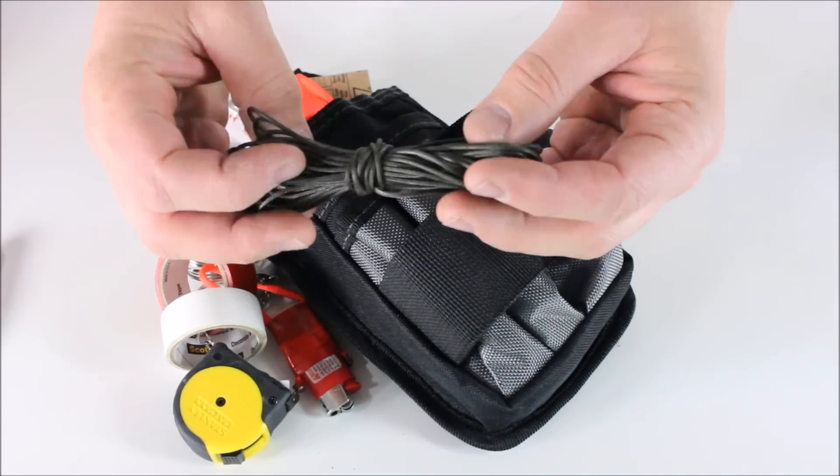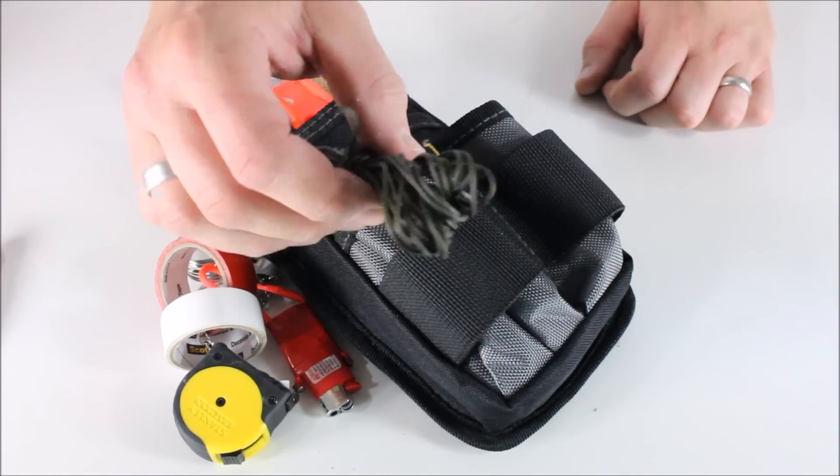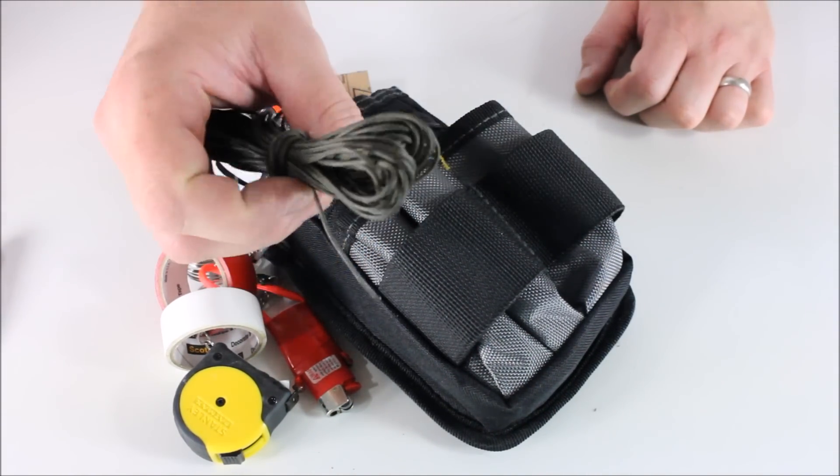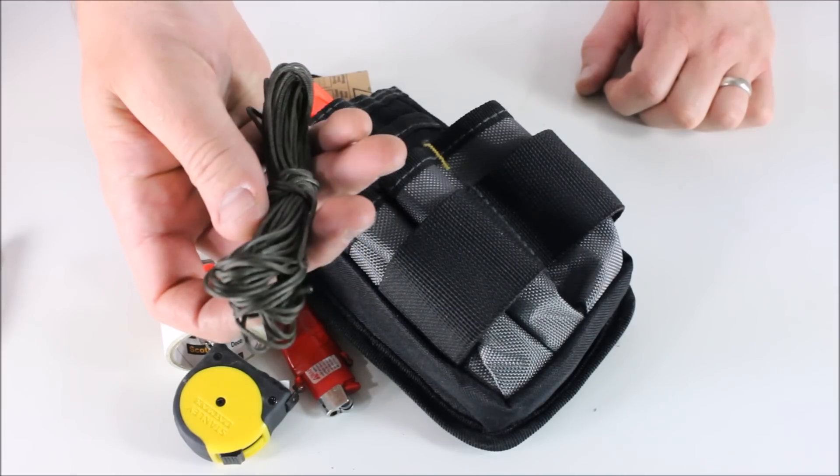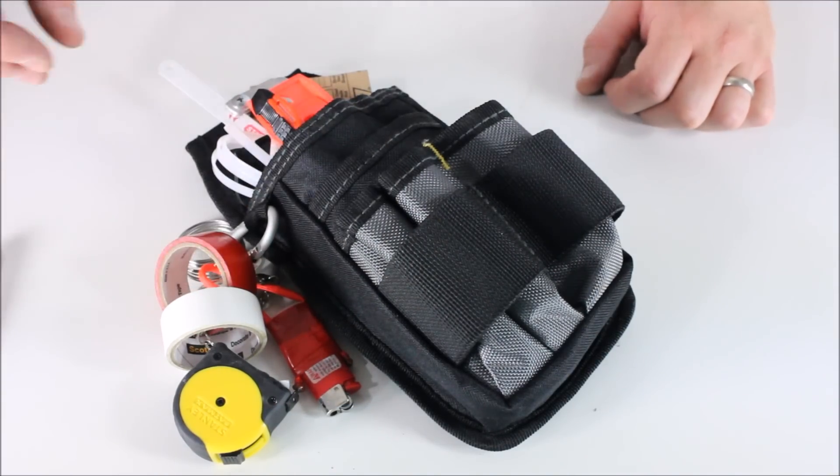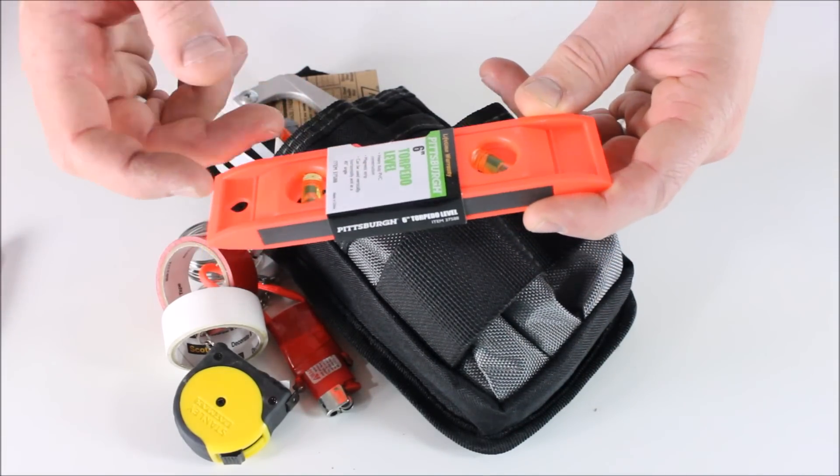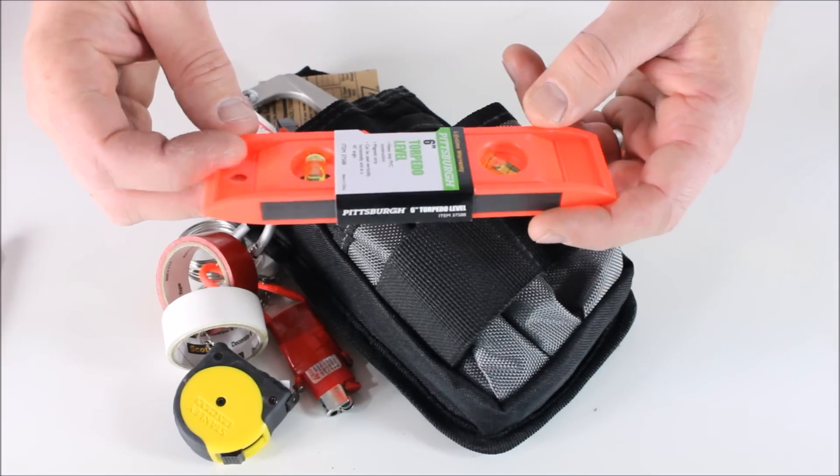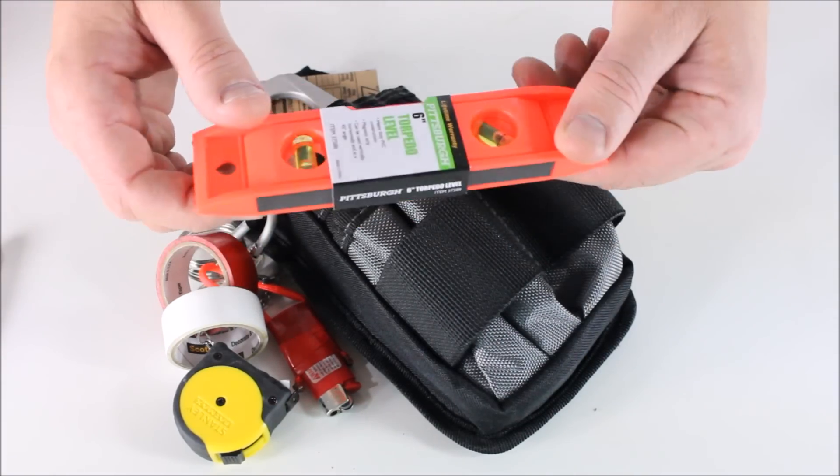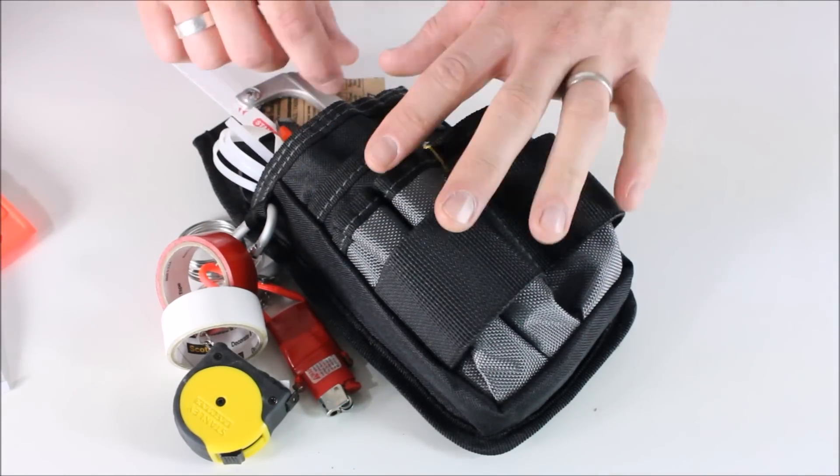Instead of doing paracord, I did bank line just because it's also very strong, a little bit more compact. So I got about 60 feet of bank line here. Got a very basic level. And I picked this up, I think at Harbor Freight. So it was like 99 cents or $1.99 or something like that. So very basic. I got a level there.